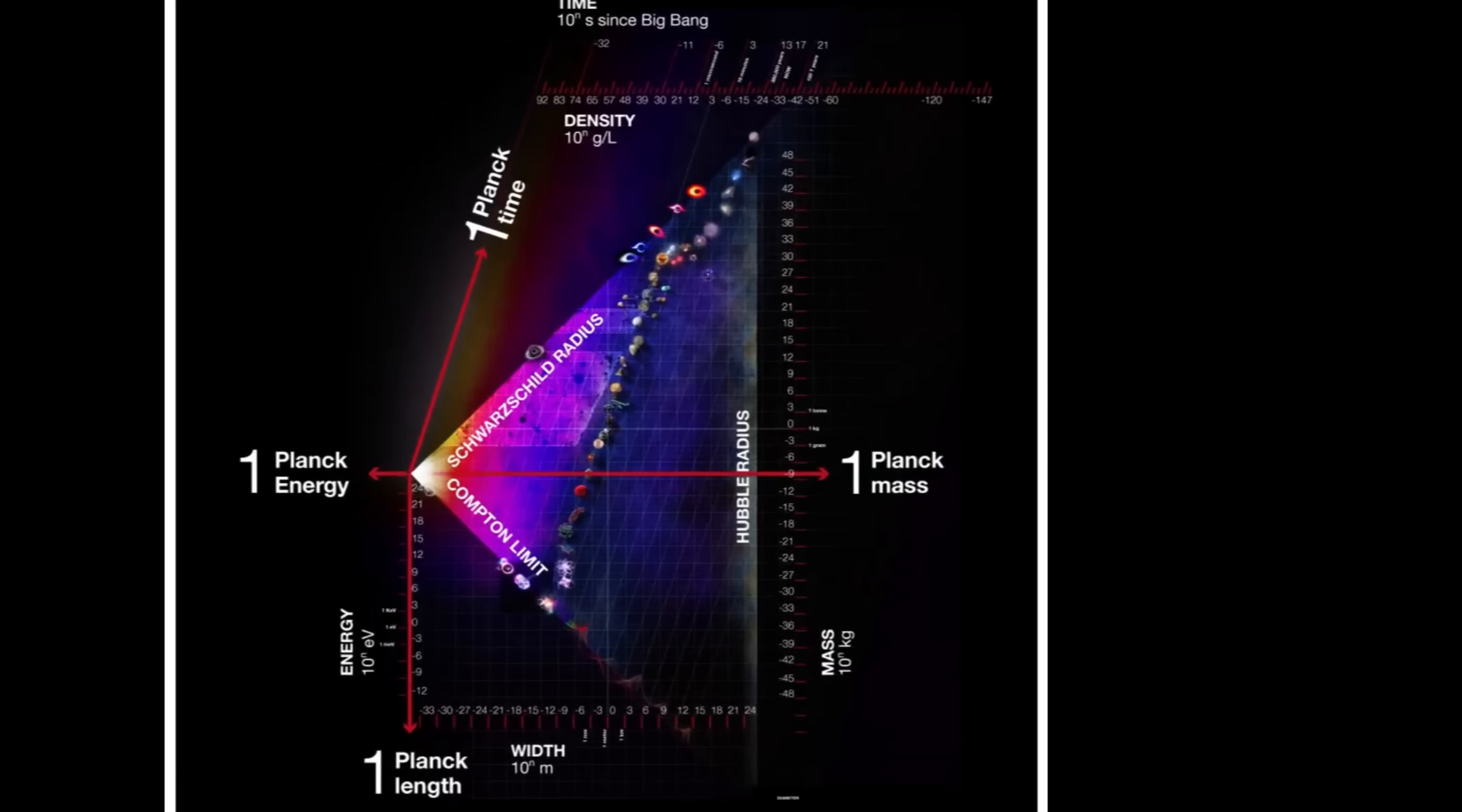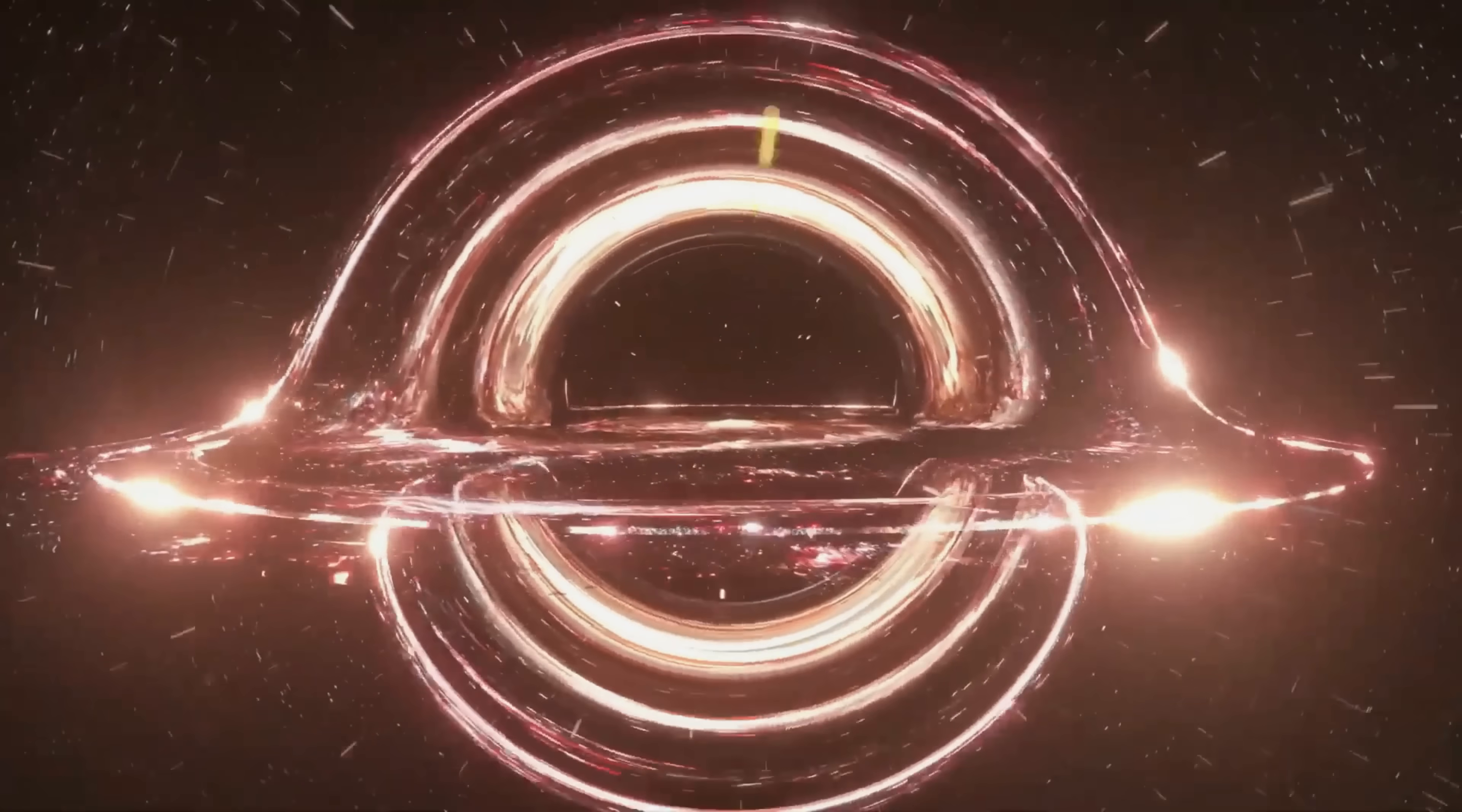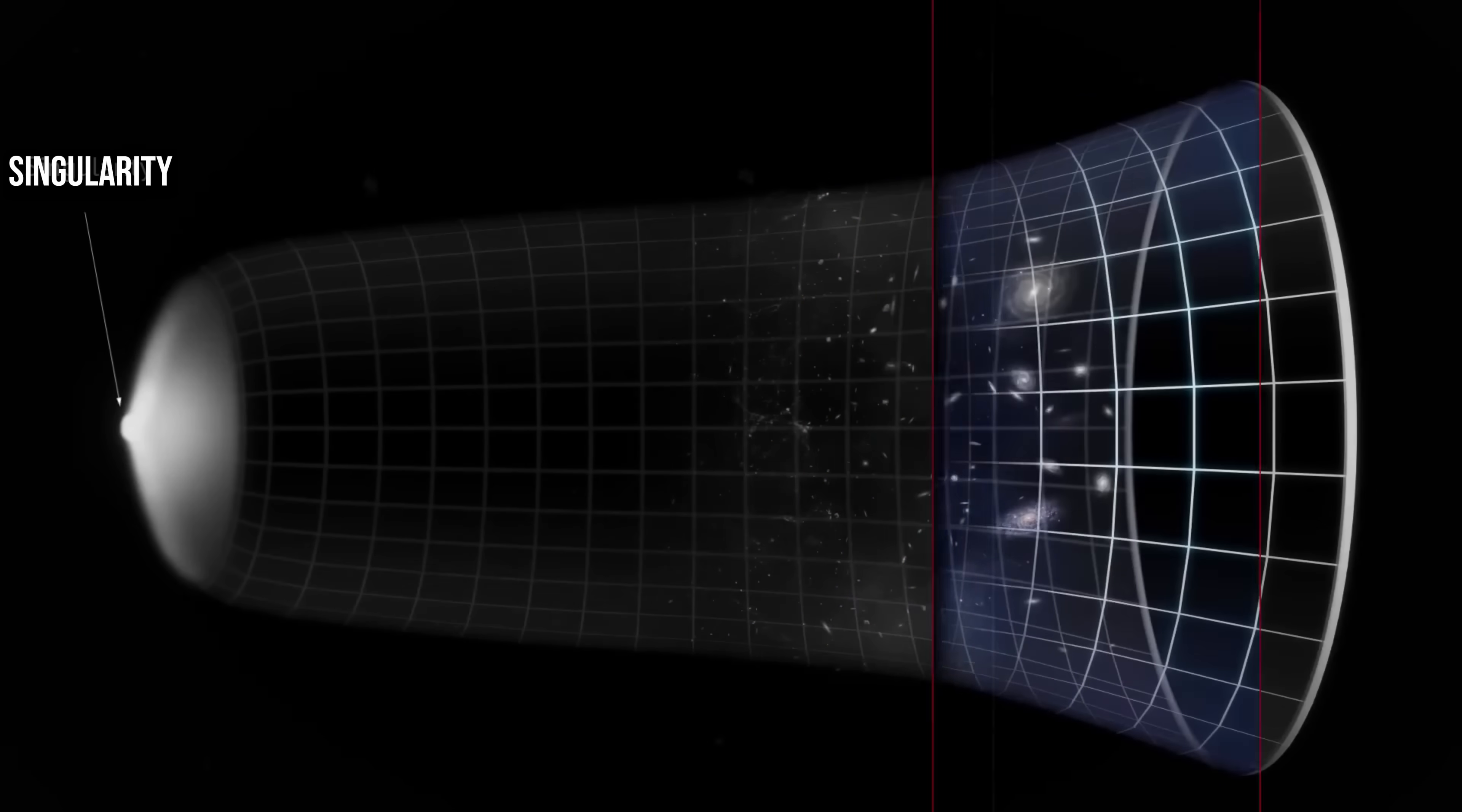This is where black hole cosmology, also called Schwarzschild cosmology, presents a radical idea. Our observable universe could actually be the interior of a black hole within a larger parent universe. This leads us back to the Big Bang. The Standard Model suggests that the universe began as a singularity, a point of infinite density, exactly like the center of a black hole.